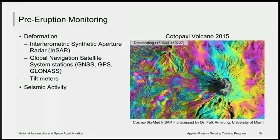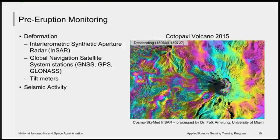Pre-eruption monitoring of volcanoes with remote sensing data is concentrated mostly on volcanoes which are remote and lack significant on-the-ground monitoring tools. Deformation monitoring from remote sensing is done with synthetic aperture radar, and in some cases other remote sensing technologies that allow the computation of topographic maps. Global navigation satellite stations like GPS and GLONASS are also used on the ground to measure deformation, and when you can install tools in situ, tilt meters are also used. Another key indicator of volcanic activity is seismic activity prior to events.